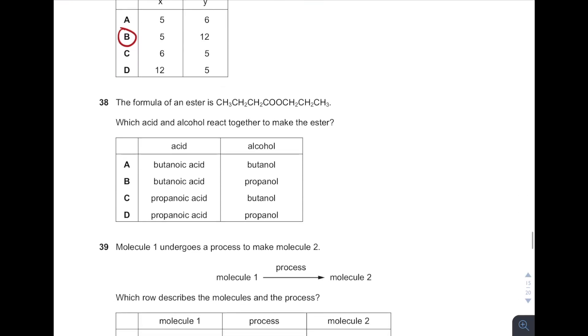38. Which acid and alcohol react together to make this ester? How do you name this ester? First, always locate the functional group. What is the functional group in ester? COO. Hydrocarbon attached after the COO belongs to alcohol, and the rest on the left belongs to the acid. For the acid, how many carbons? 1, 2, 3, 4. Four carbon, butanoic acid. Alcohol, how many carbon? 1, 2, 3. Three carbon, propanol. So answer is B.